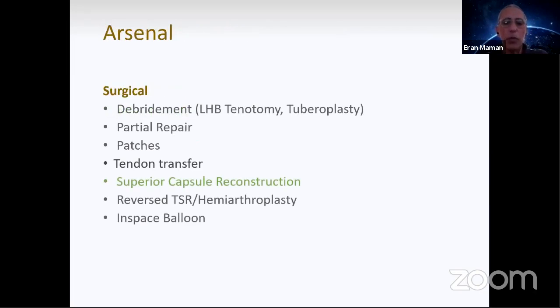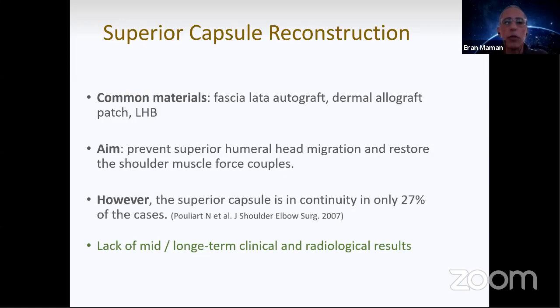What about superior capsular reconstruction? It's quite interesting because the logical idea behind it makes sense. There are several common materials - the fascia lata which was first described by Mihata, dermal allograft you can buy off the shelf, or long enough biceps. The aim is to prevent superior humeral head migration and restore the shoulder muscle force couples.